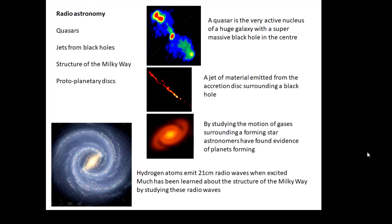And by measuring these 21 centimeter radio waves and also seeing if they're redshifted or blueshifted, we can work out the structure of the Milky Way, all the different spiral arms of the Milky Way, by looking at these radio waves. And lastly, proto-planetary disks.